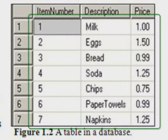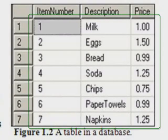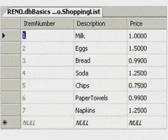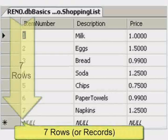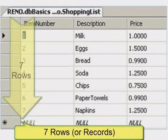In GeekSpeak, a collection of rows and columns of data is called a table. Figure 1.2 is a screen capture of a table from SQL Server. This table has only seven rows. Calling them rows is fine in GeekSpeak, but a few hardcore SQL folks might want to call them records. If you have seven rows, you can also say that you have seven records.